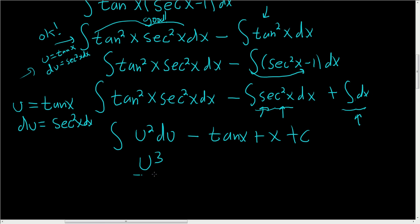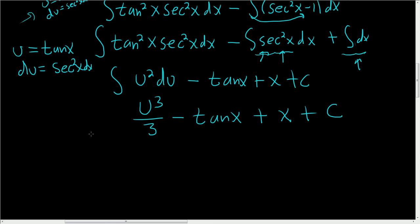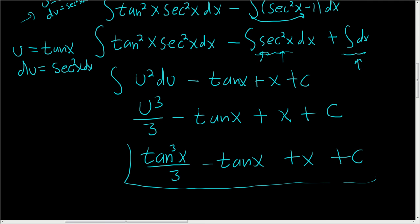This will be u cubed over 3 minus the tangent of x plus x plus a constant. And u was tangent x, so we end up with tangent cubed x over 3 minus the tangent of x plus x plus c. So whenever you have a lone tangent being raised to an even power all by itself, save a copy of tangent squared and convert the rest to secants.